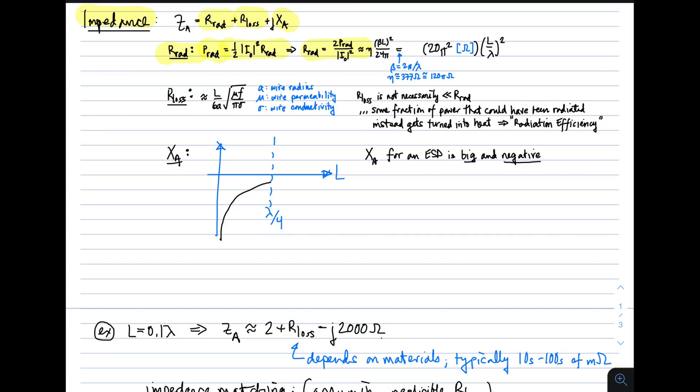We have an expression for the radiated power. So, we find that we get, for the radiation resistance, eta times beta L squared over 24 pi. Of course, we can go further. Beta is 2 pi over lambda,